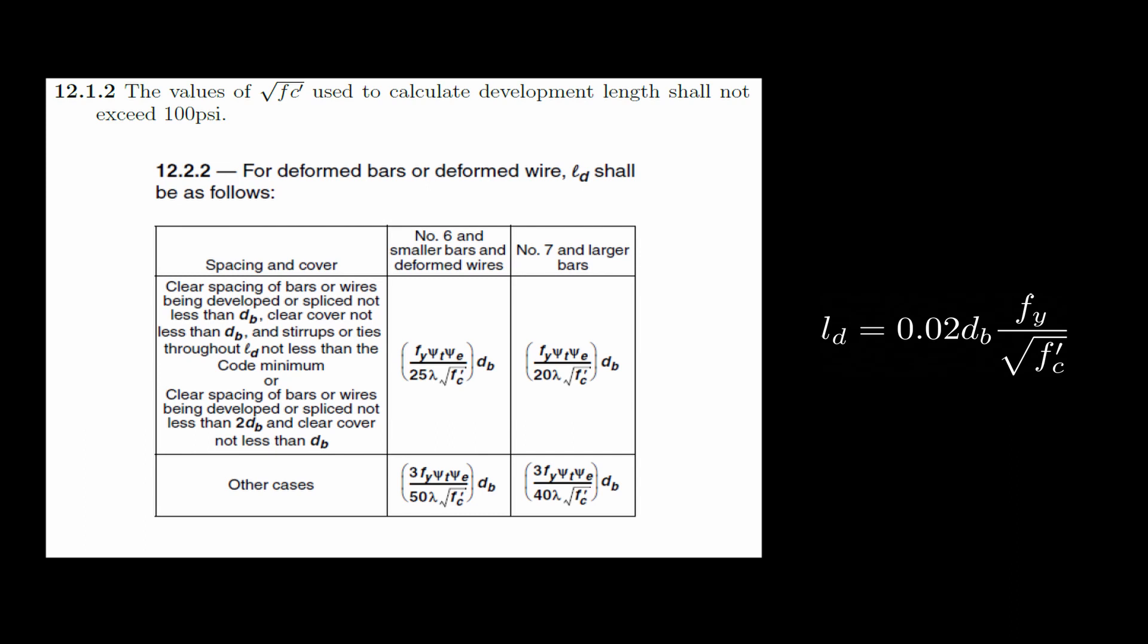The minimum development length, LB, is 12 inches. The psi values are factors which affect the bond, such as bar location and epoxy coatings. Here's a summary of their values.